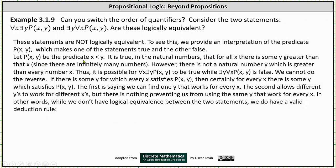Let P(x, y) be the predicate x is less than y. It is true in the natural numbers that for all x there is some y greater than x, since there are infinitely many numbers. However, there is not a number y which is greater than every number x.